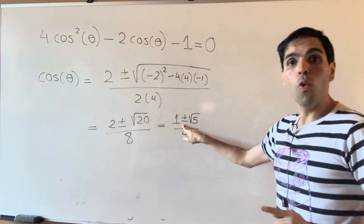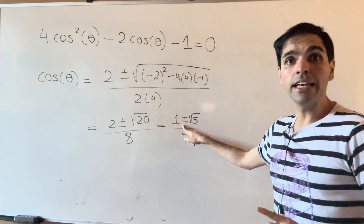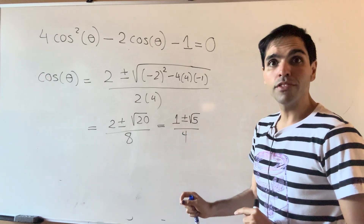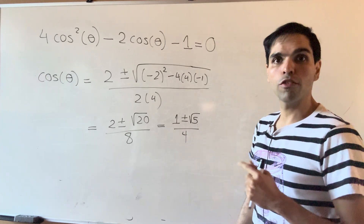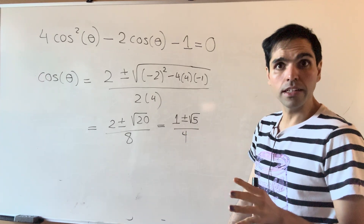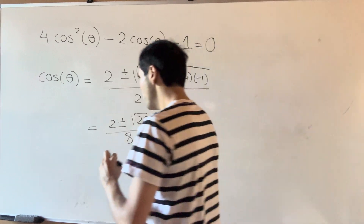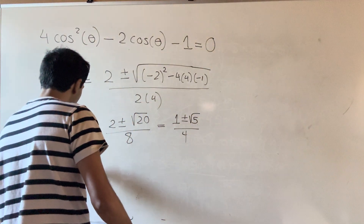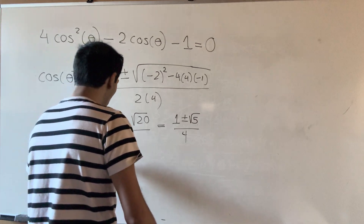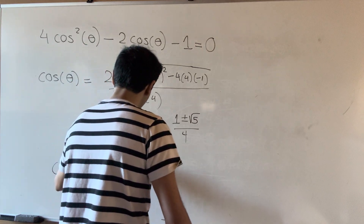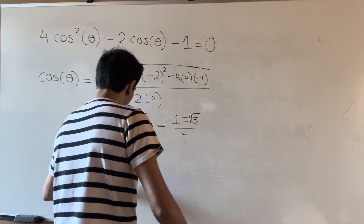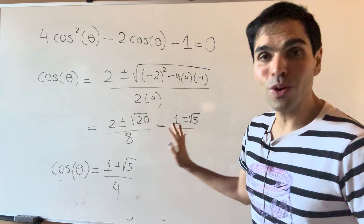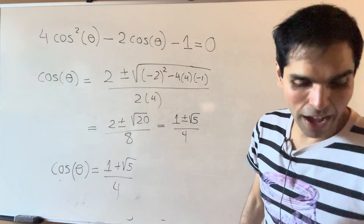However, one minus square root of five over four is negative, but cosine of pi over five is positive. So we end up with cosine of theta equals one plus square root of five over four. Interestingly, we have also found cosine of pi over five.